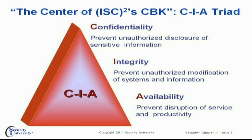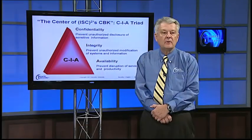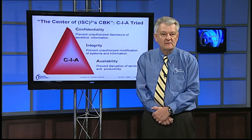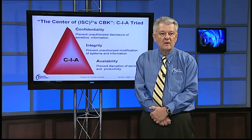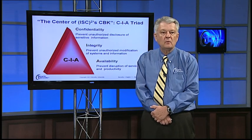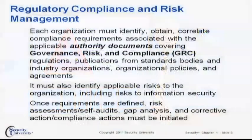Let's go back to the triad — confidentiality, integrity, and availability. These are the three main protection objectives for any type of information assets we have. Always remember these three whenever you're dealing with why we need to do information security.